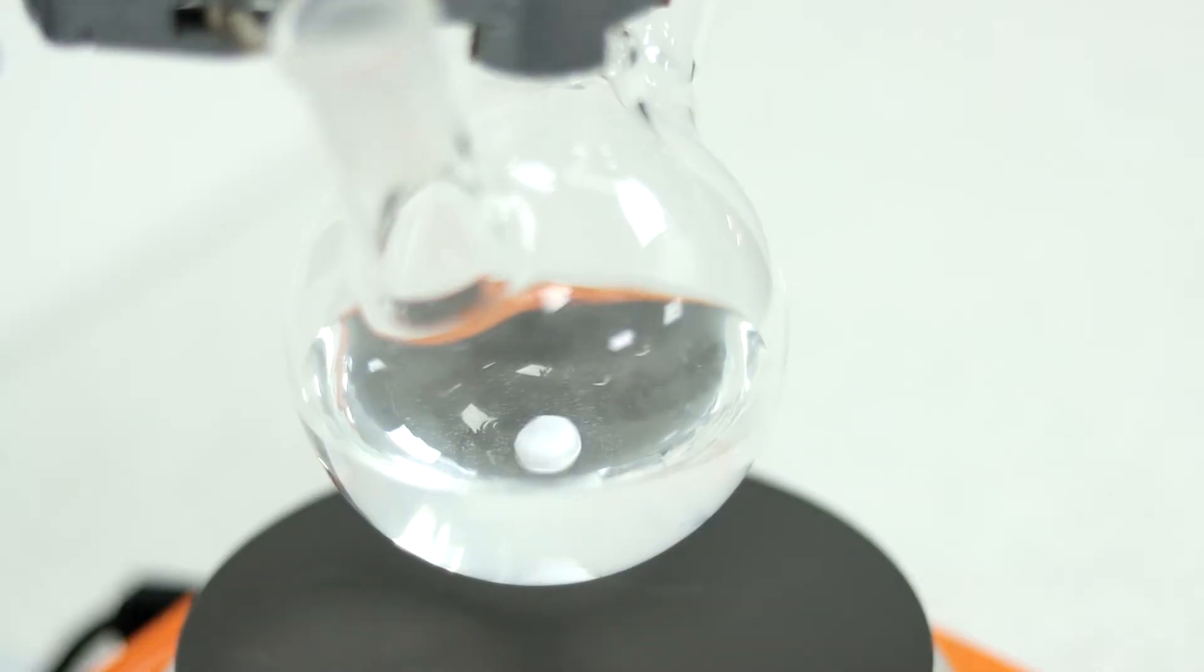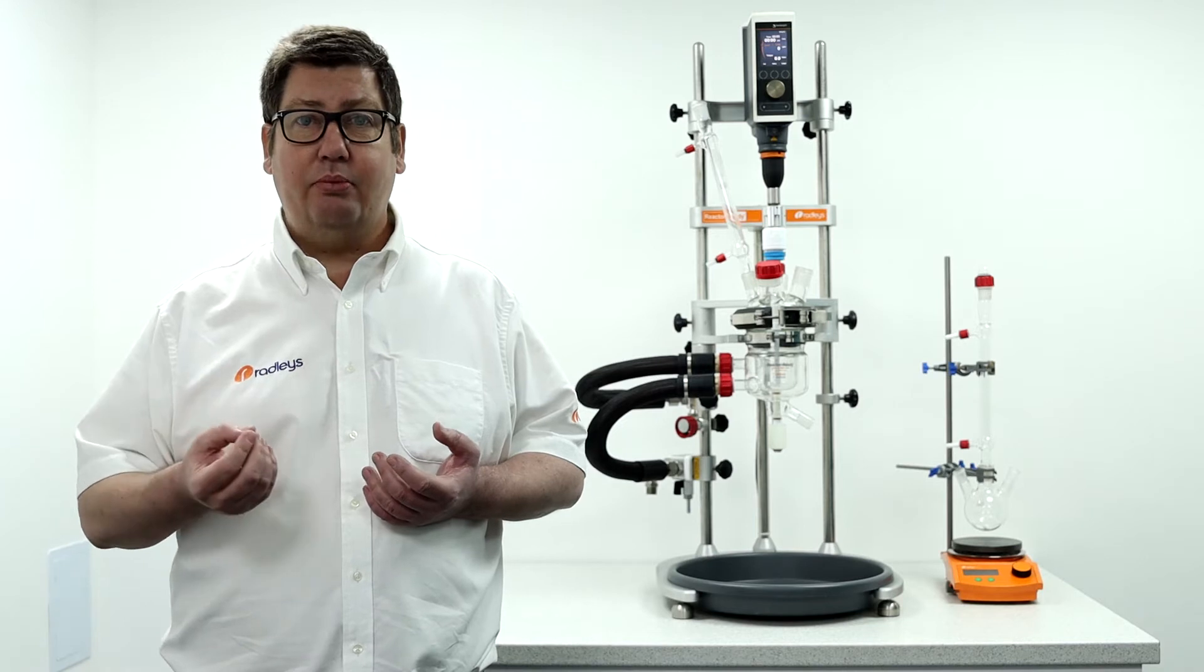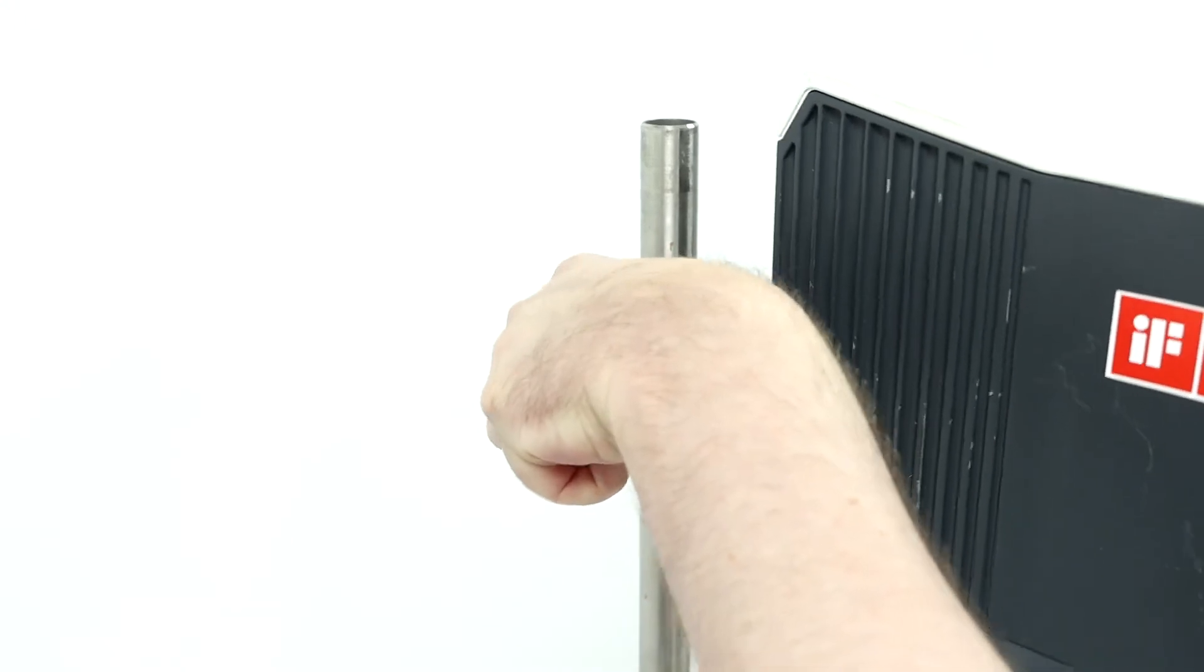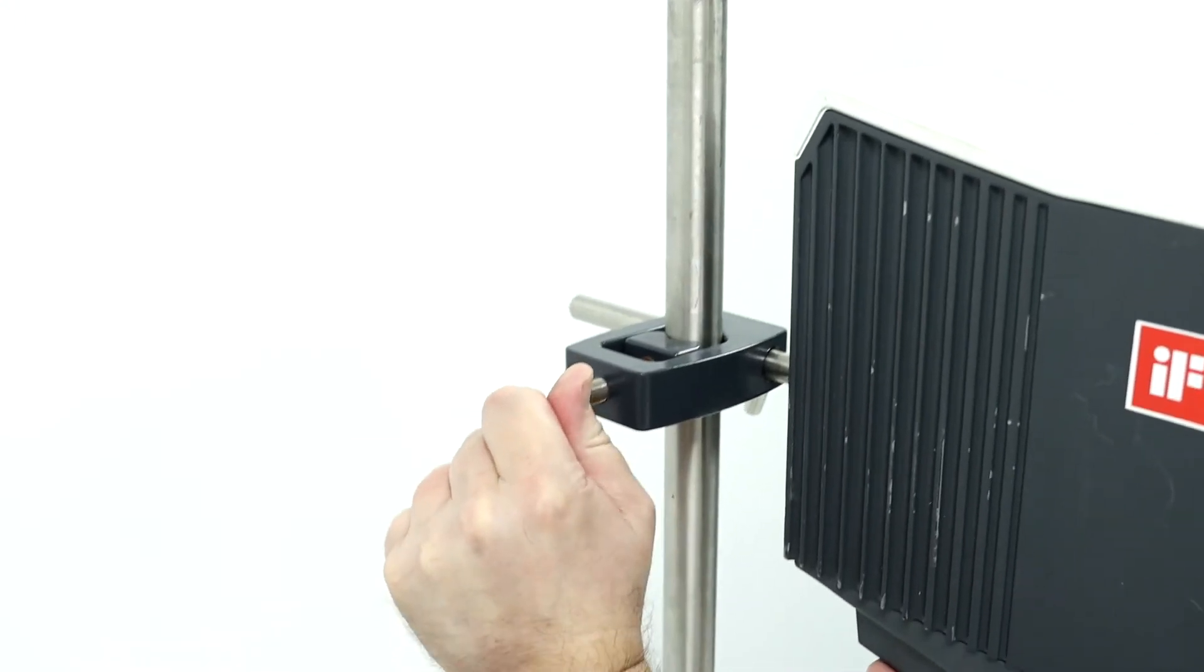We often find the chemist might prefer to use magnetic stirring with stirrer bars on a scale of 50 ml, 100 ml, 250 ml for example as opposed to overhead stirring where traditional systems may be more difficult to set up.